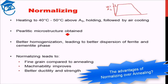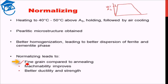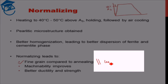The advantages of normalizing are that compared to annealing it provides a finer grain structure. Full annealing had a really slow cooling step, causing grain coarsening, whereas normalizing is comparatively faster cooling, resulting in finer grains. In addition, another advantage over full annealing is that normalizing takes less time, thereby consuming less energy.